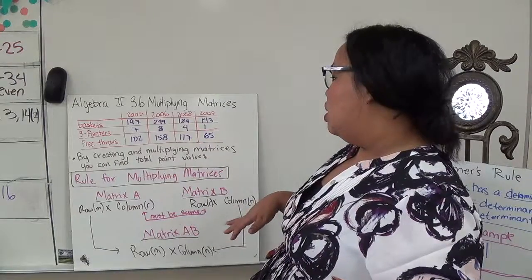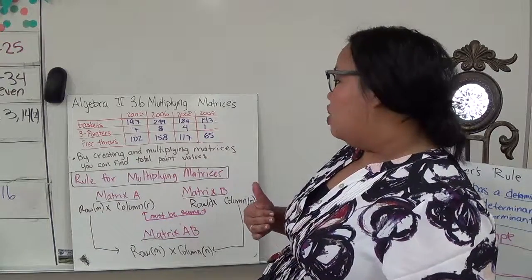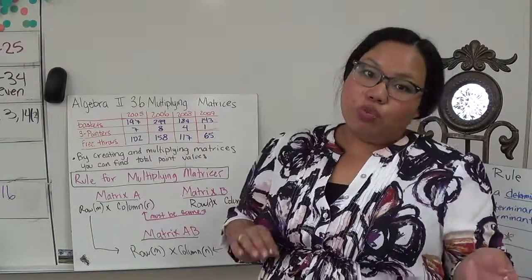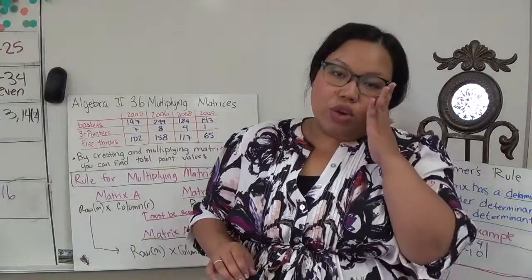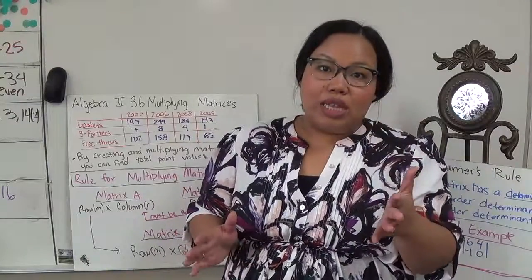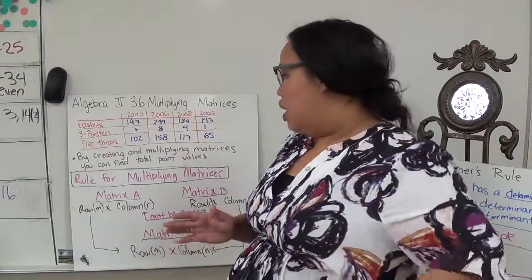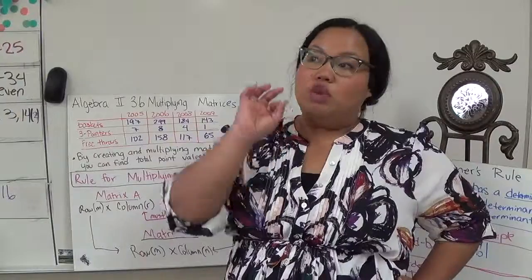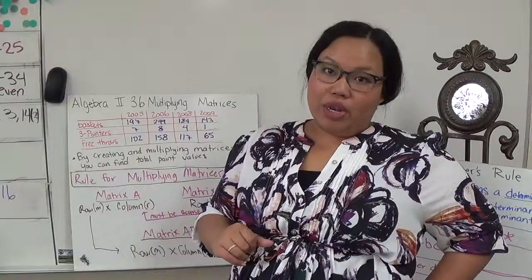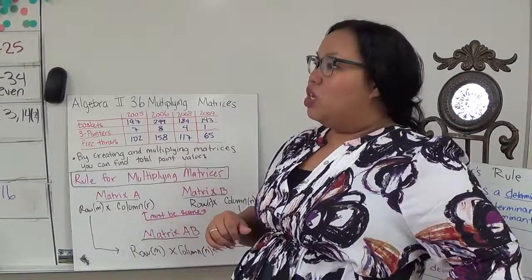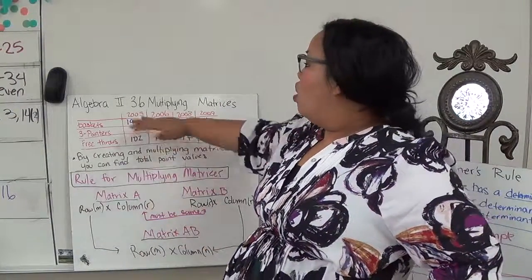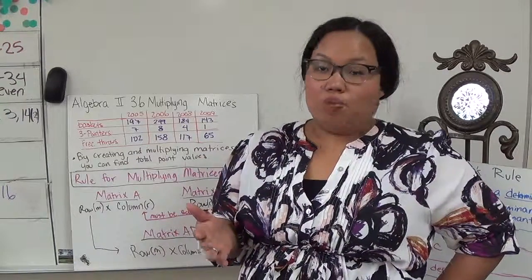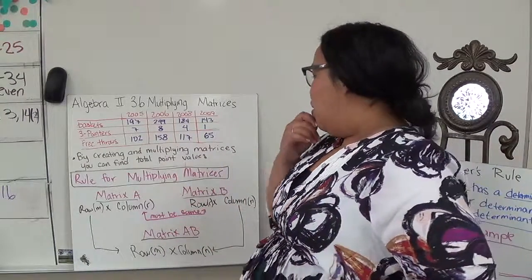So I can use a matrix to find out how to do this and find the total points in an organized way. By creating matrices, I can find the total point values for each year, but there are certain rules you need to know when multiplying matrices together. It's not just like a scalar multiple where you multiply each one by the same number.